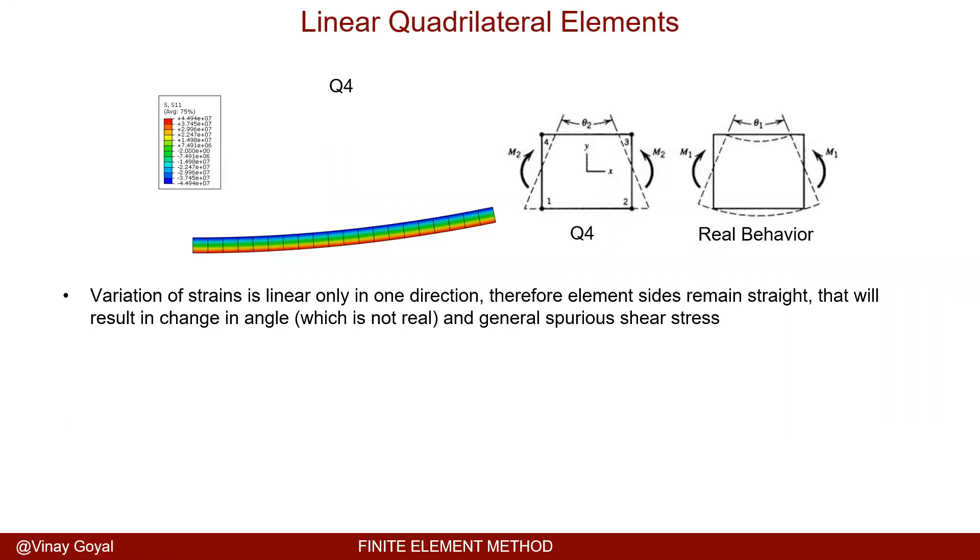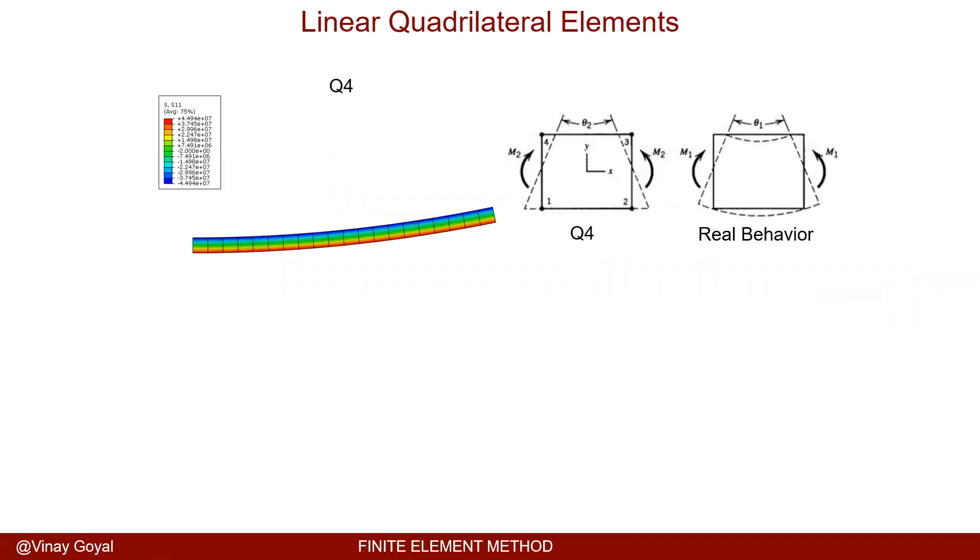Linear quadrilateral elements also have their own problems. For example, here you can see a Q4 element being bent. I have to apply bending to this element and you can see here that this element will bend in this manner. The real behavior though is that this edge has to deform in this manner and this edge has to deform in this manner, but it can't, so that's going to run into a problem. You're going to get element locking as well.